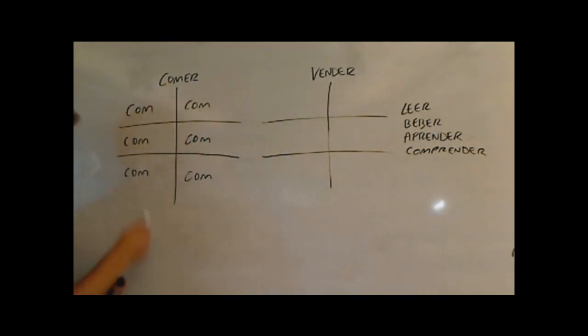So comer means to eat. If I want to say I eat, take off the ER, add O to it. Como for I eat. If I want to say you eat, comes, tu comes. He or she eats, come.